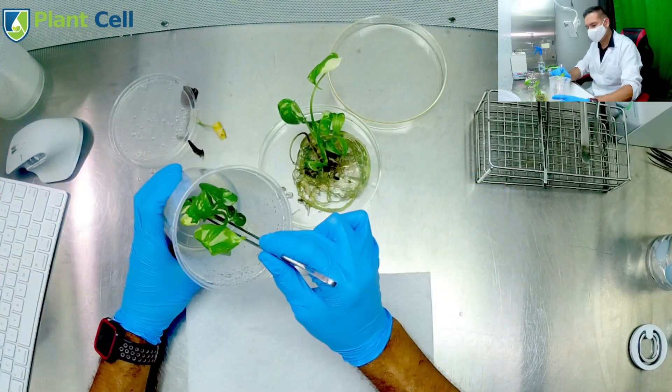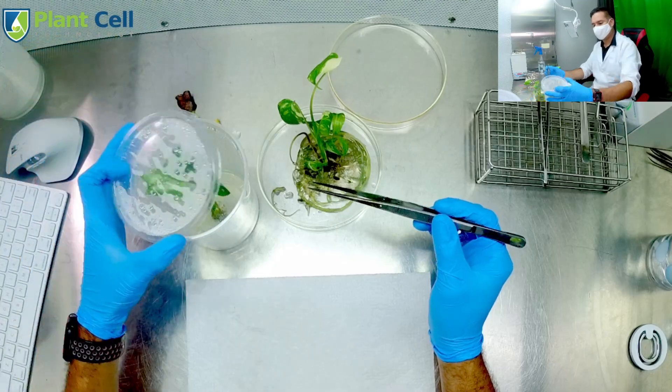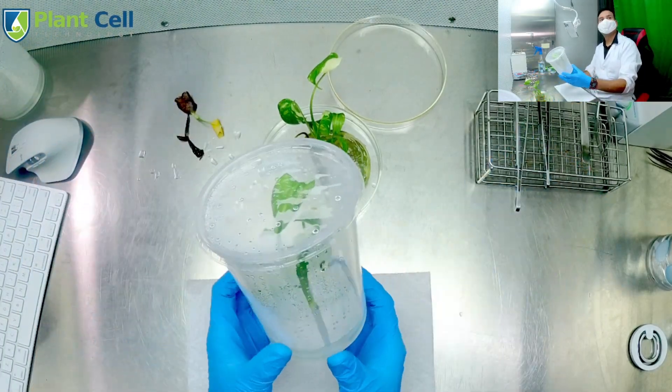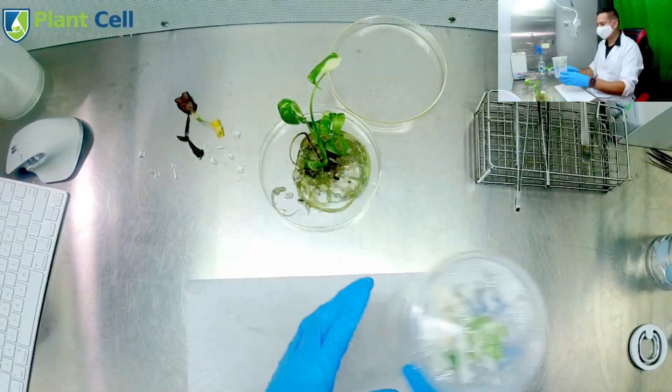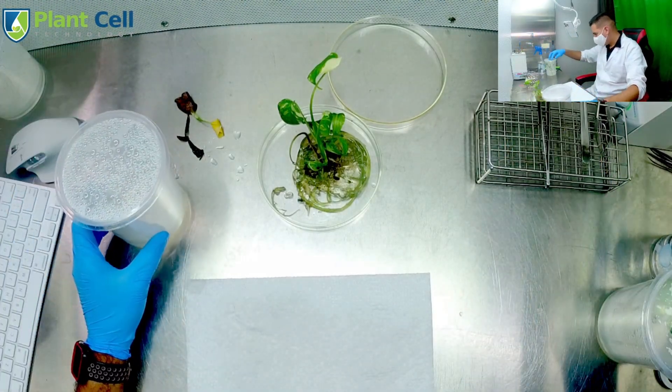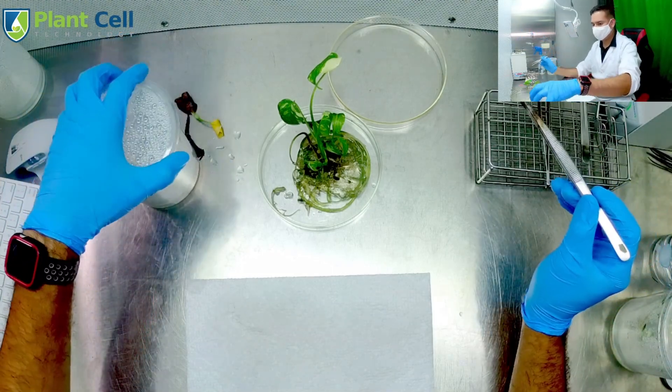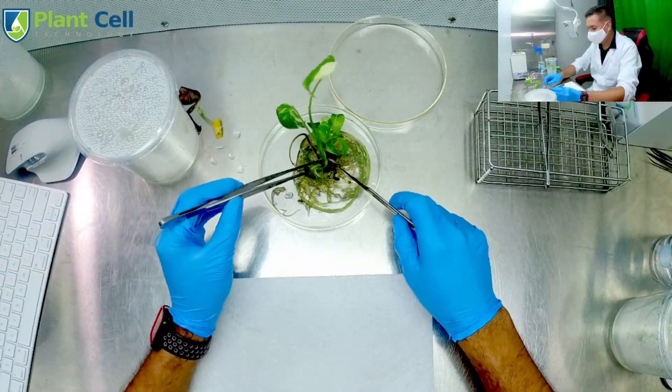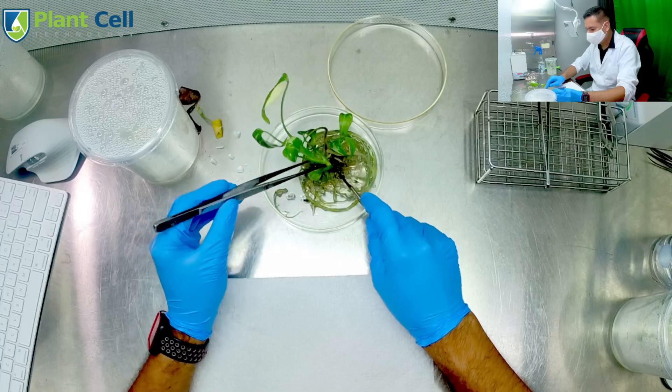The biggest two plants are going to the same media. However, the next two smaller plants are going to different media. This media has 3 milligrams per liter of BA and that's it - there is no IBA for this media. So it is MS medium, 30 grams of sugar, and 3 milligrams per liter of BA.